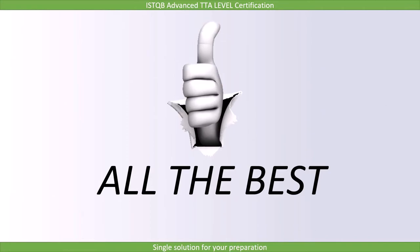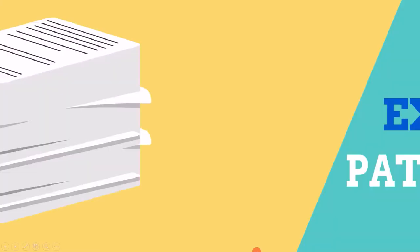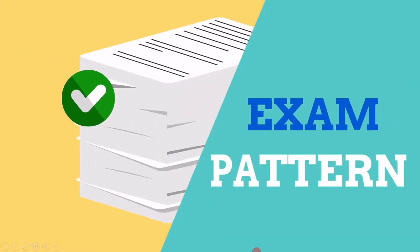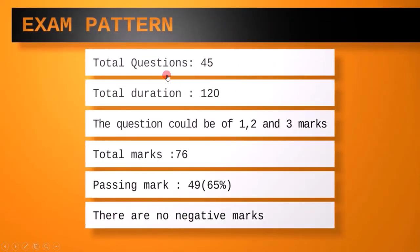All the best for the ISTQB exam. The total number of questions in the exam are 45. The total duration provided to clear the exam is 120 minutes. A question could be of 1, 2, or 3 marks. Total marks are 76, and the passing mark is 49, which is 65%. There are no negative marks for wrong answers, so answer all the questions.